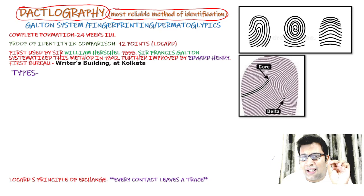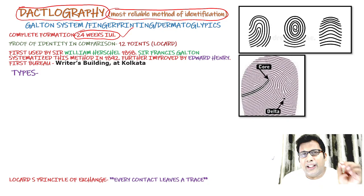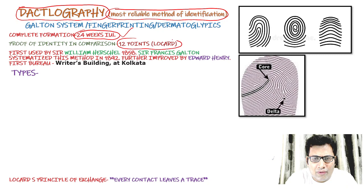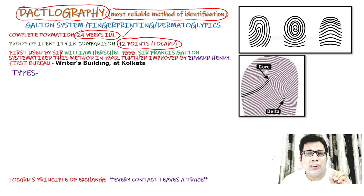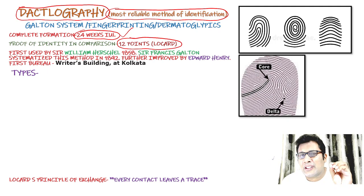Dactylography is also known as dermatoglyphics. The complete formation of fingerprints takes place at 24 weeks of intrauterine life. For proof of identity, there should be a minimum of 10 to 12 points matched according to Locard. It was first explained by William Herschel in 1858, later improved by Galton, and further improved by Edward Henry.